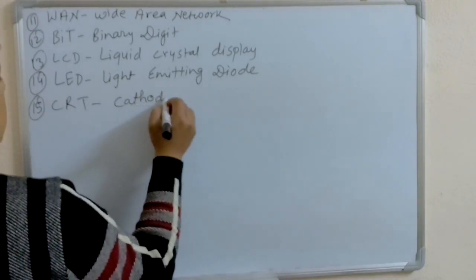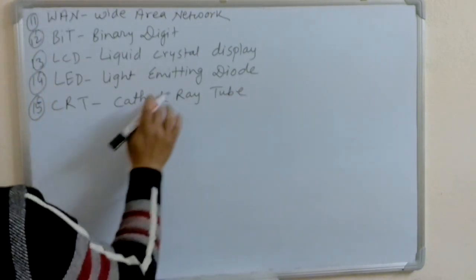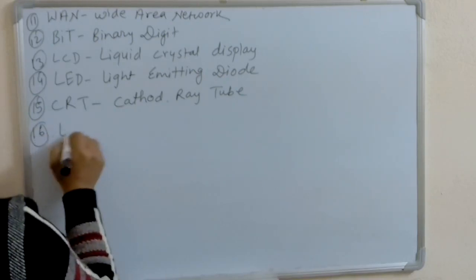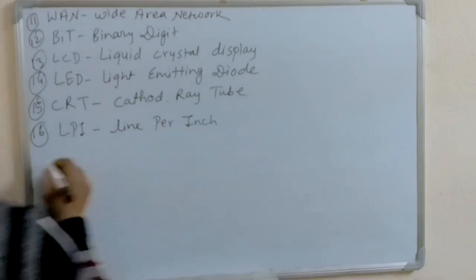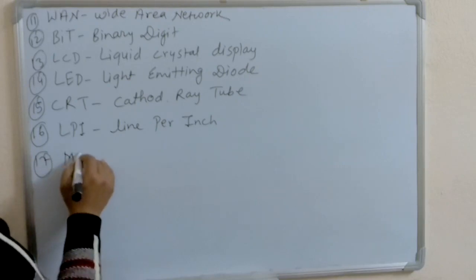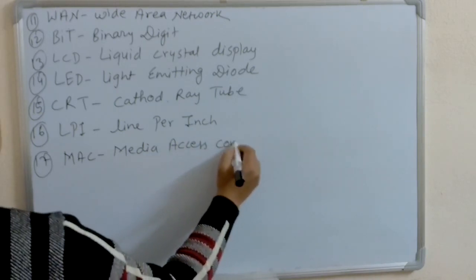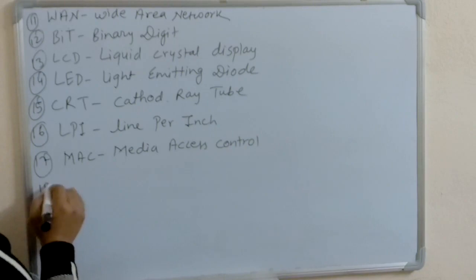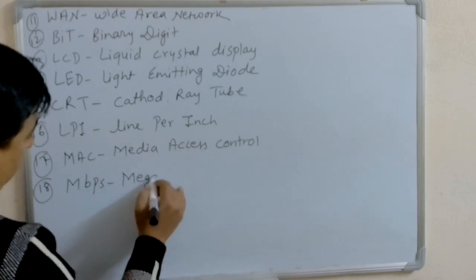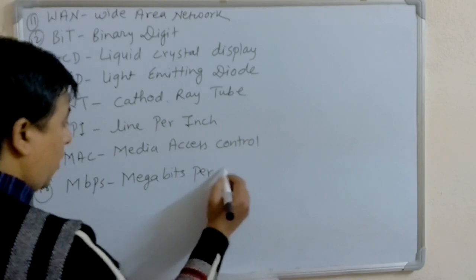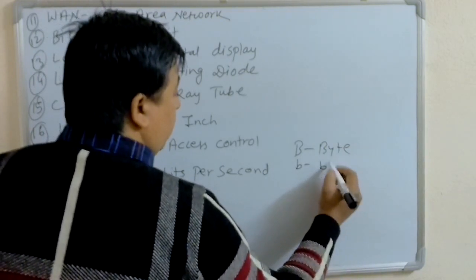CRT: Cathode Ray Tube. LPI: Line Per Inch. MAC: Media Access Control. MBPS: Megabits Per Second. Note: small 'b' means bit, capital 'B' means Byte. KBPS: Kilobits Per Second.